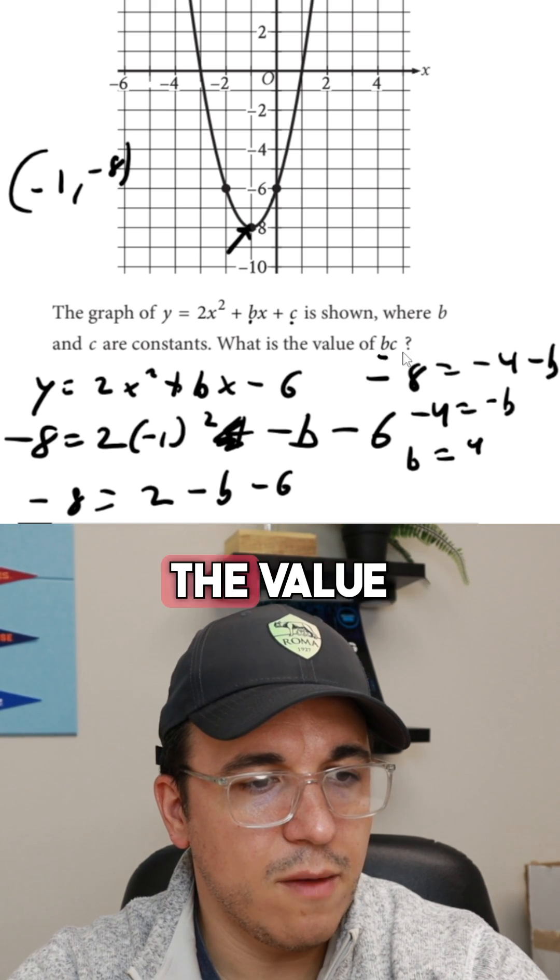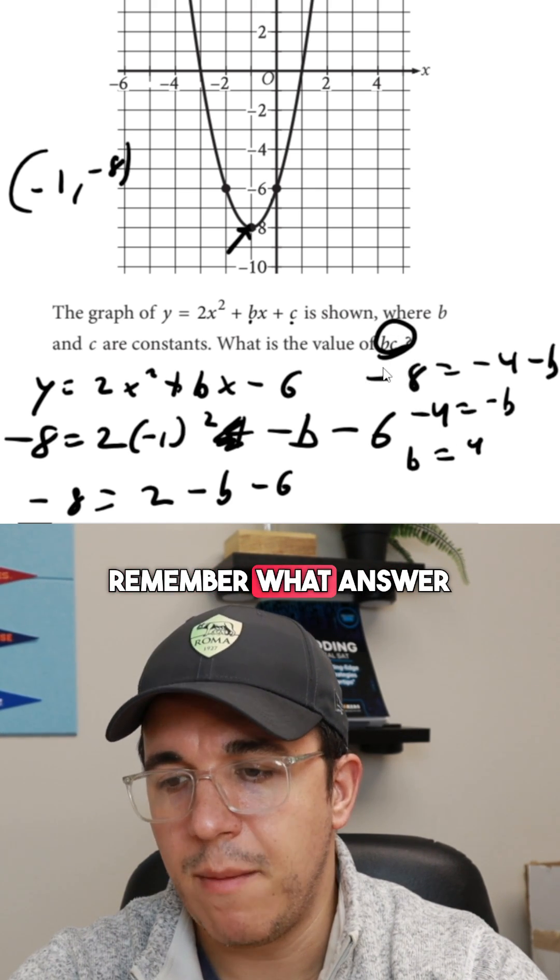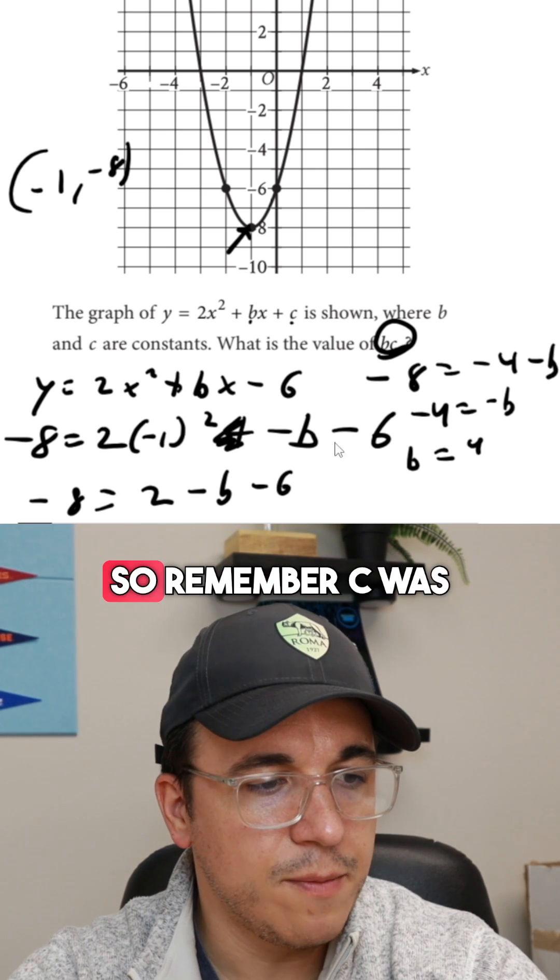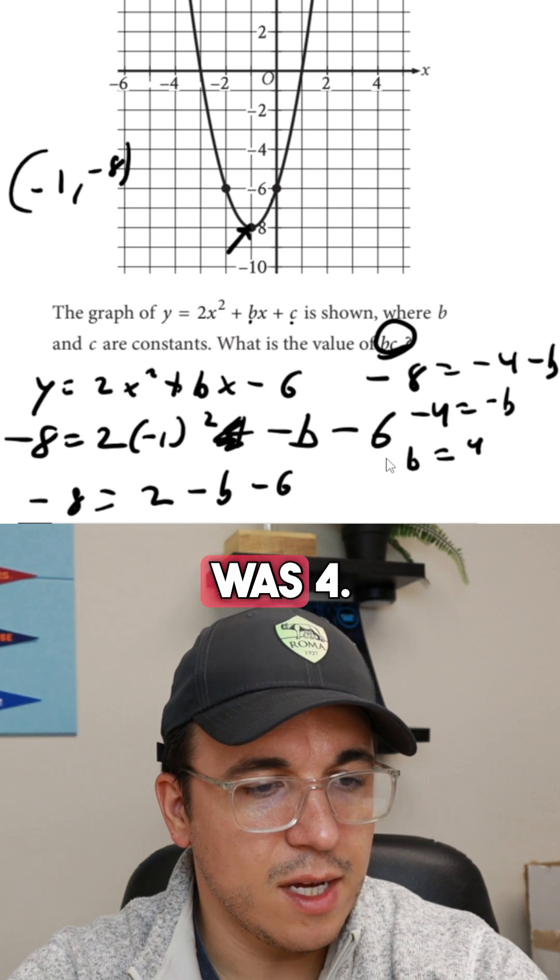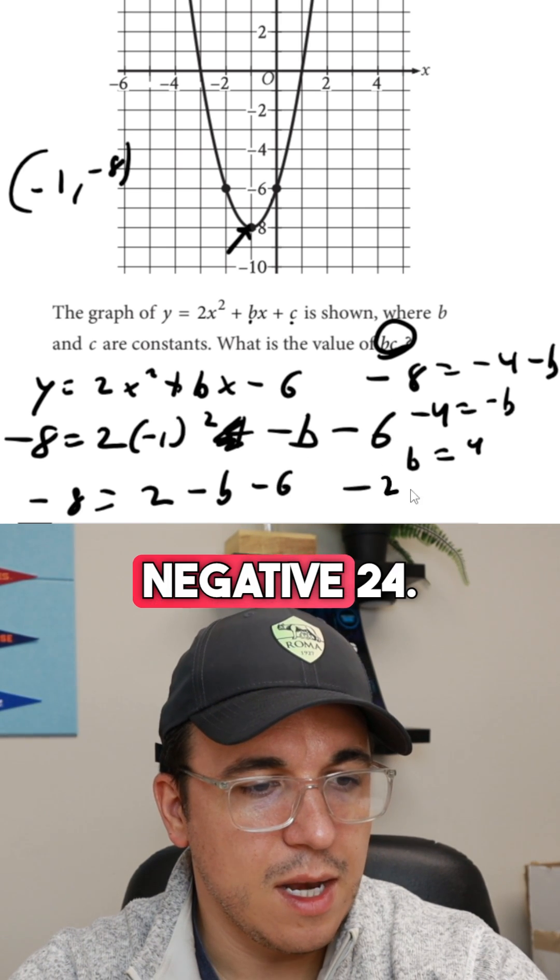And then they wanted the value of bc. Always remember to go back to the problem to remember what answer you're trying to put down. So remember, c was negative 6, b was 4. So we're going to get negative 24.